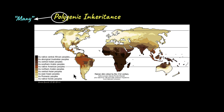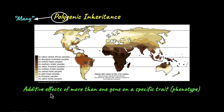In polygenic inheritance, since there are more than one gene involved, the additive effects of the genes contribute to the expression of the phenotype. But what does this mean — additive effects of more than one gene?